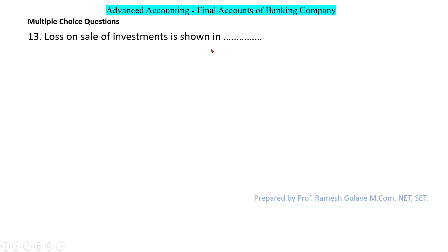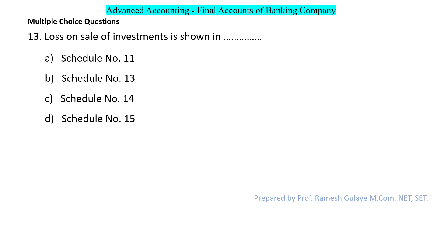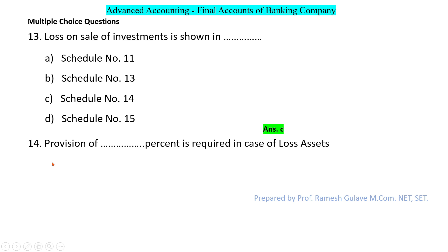The next question says loss on sale of investments is shown in which schedule. Loss on sale of investments — along with profit on sale of investments, income from transactions, and profit on exchange transactions — is shown in schedule number 14, so option C is the right answer.